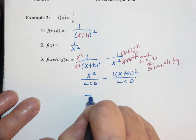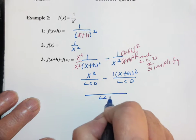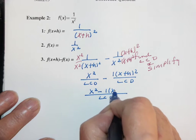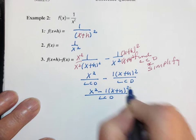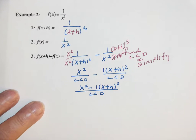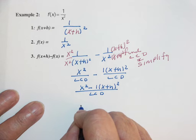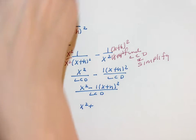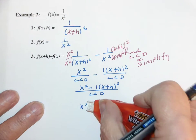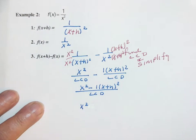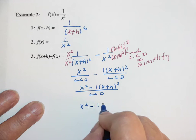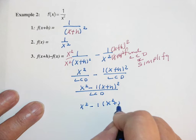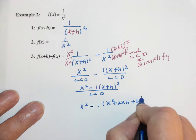Which is over the LCD x² minus 1 times (x+h)². Which is x² plus, or not plus, minus 1 times (x+h)² is x² plus 2xh plus h².